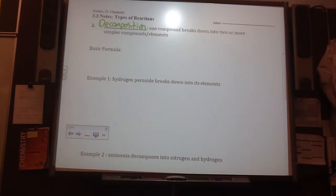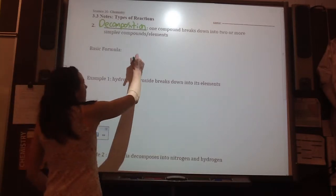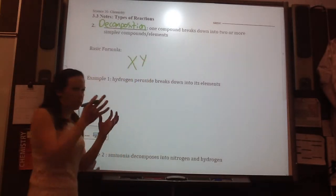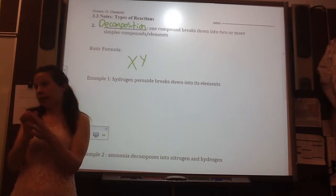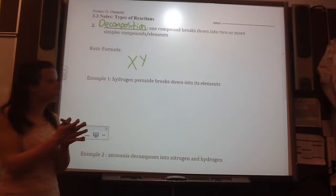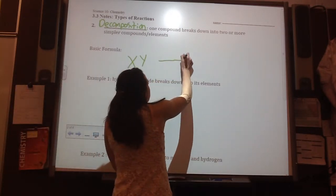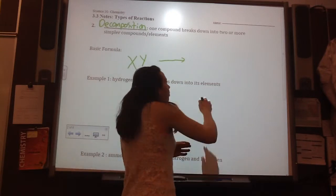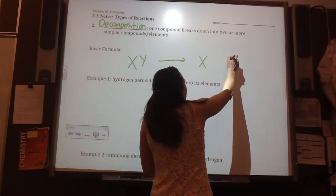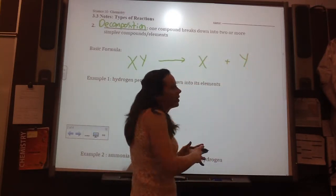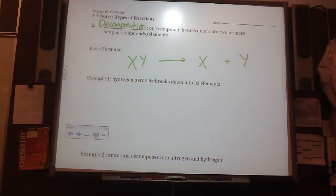A basic formula of how we can approach this is that we have one big compound that is together, say, x and y, and something happens that causes it to break down into x plus y. So, it separates out into its smaller parts. It is backwards.